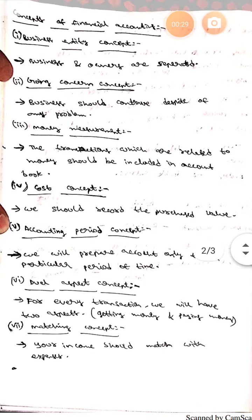The fifth one is accounting period concept. Here we will prepare accounts only for a particular period of time, whereas the sixth one is dual aspect concept. Here for every transaction we will have two aspects.